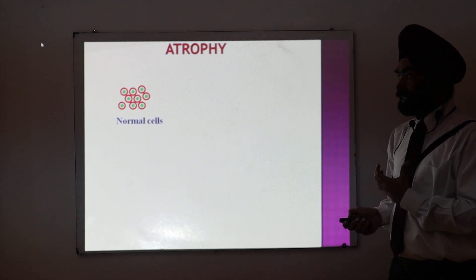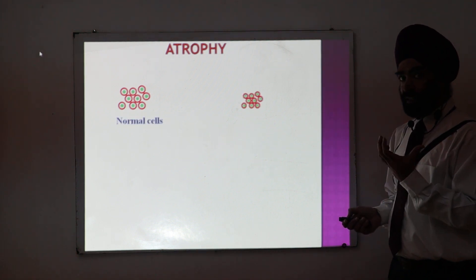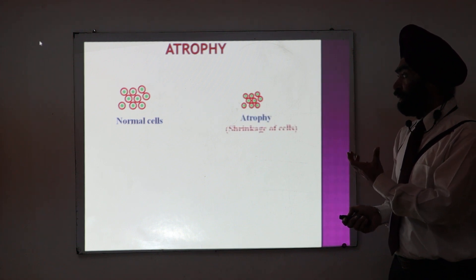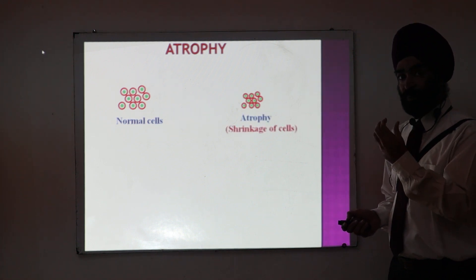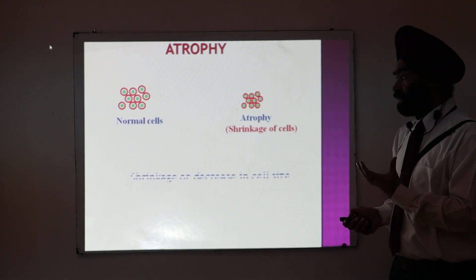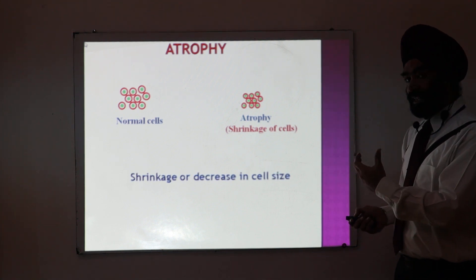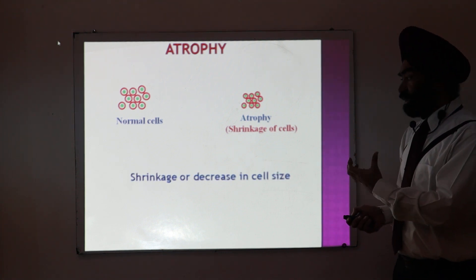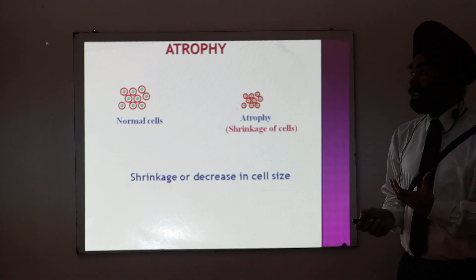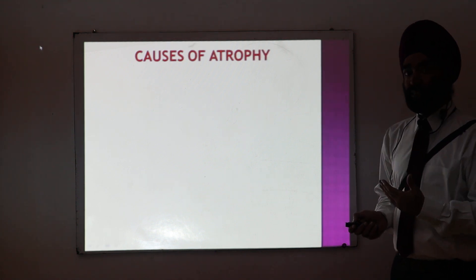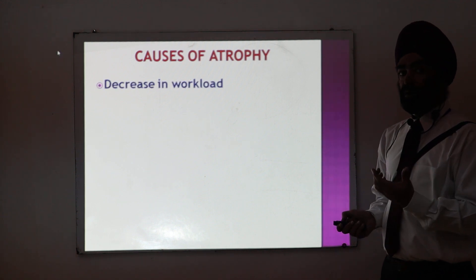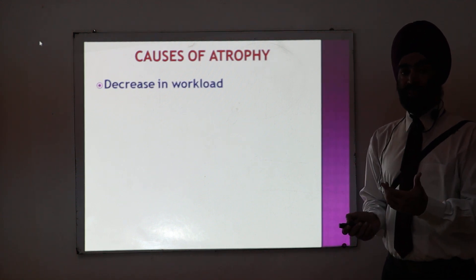First is atrophy. Let's say we are having normal cells and a cell injury causing agent is present — then there is a shrinkage of the cell size; the cell becomes very small. That is known as atrophy. So the definition is: the cell shrinks, the size of the cell is reduced or decreased — that is called atrophy.